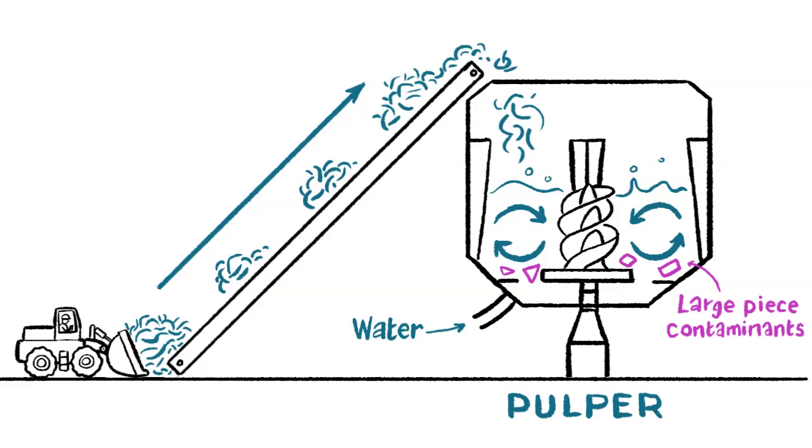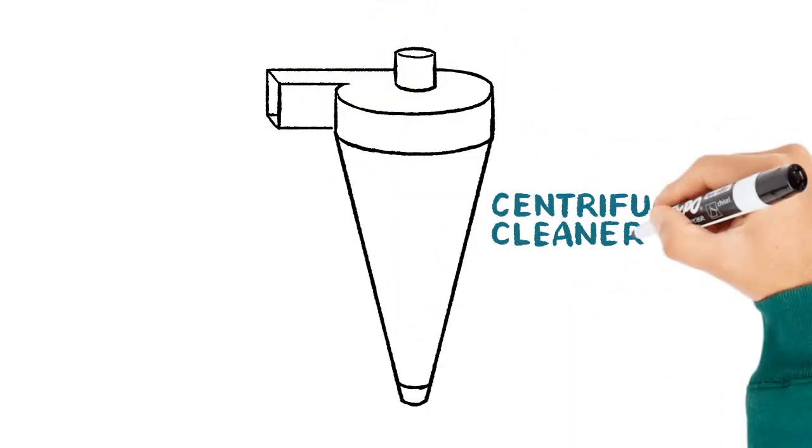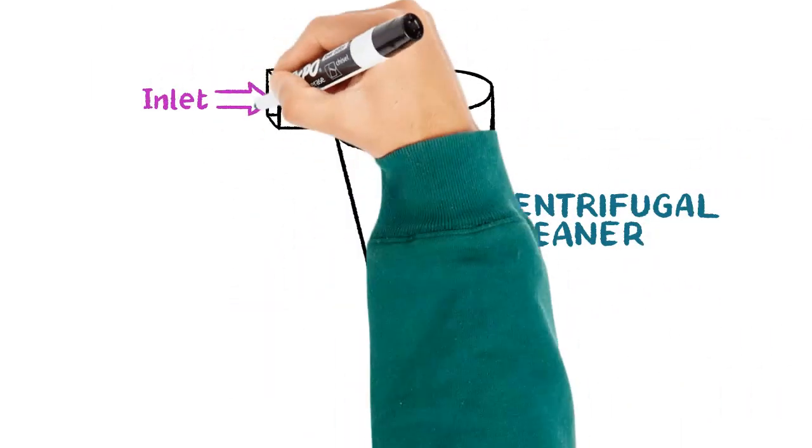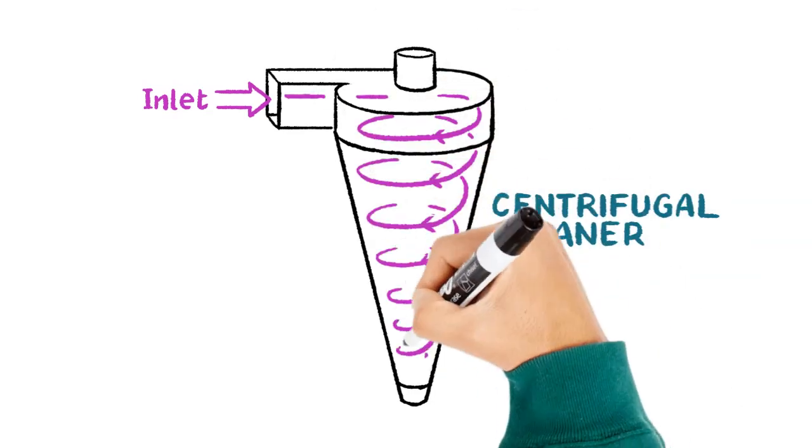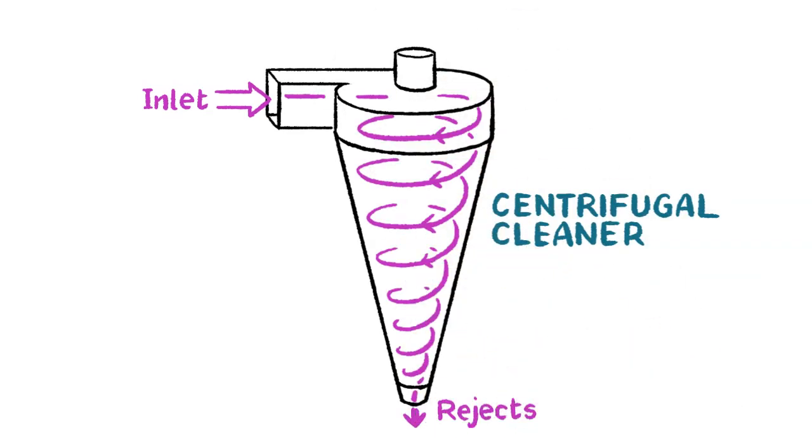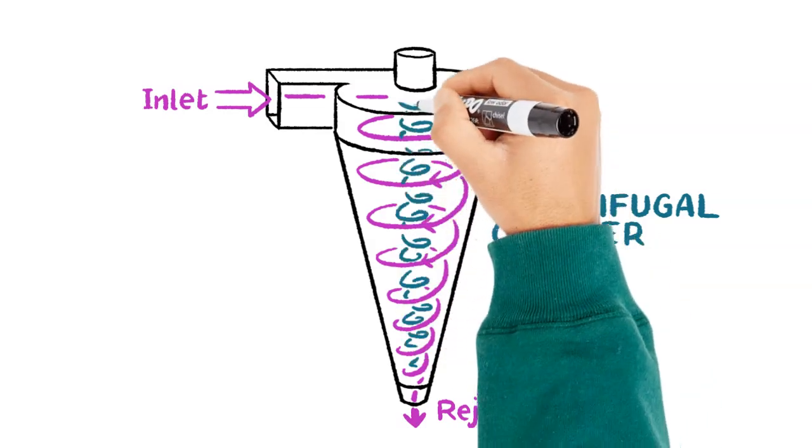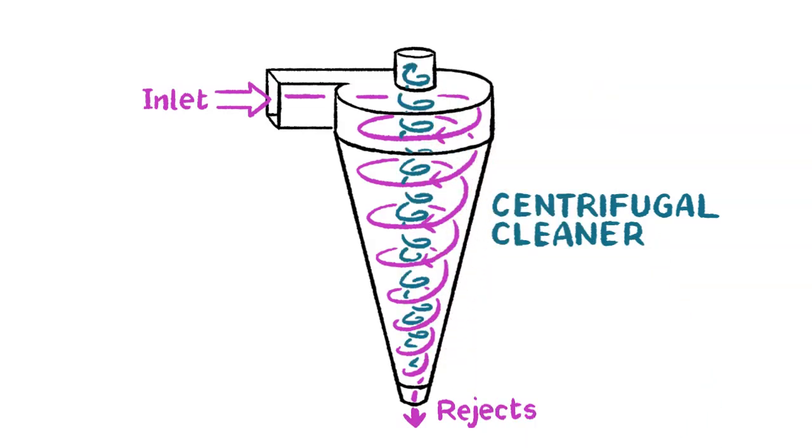Pre-screening then removes these large pieces before more water is added to dilute the pulp and help move it through a centrifugal cleaner. Smaller impurities are removed here when they drop to the bottom, while the pulp material flows toward the center before being sucked up through a vortex finder.